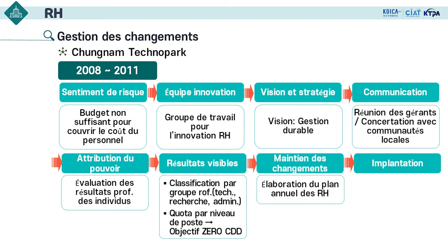Nous avons aussi concerté avec le gouvernement et les communautés locales. La restructuration a été exécutée après discussion avec les chefs d'équipe en tenant compte de l'évaluation de la performance des individus. Nous avons obtenu un résultat visible : la classification des groupes professionnels a été introduite, divisés en groupes tech, recherche et admin. En introduisant le quota par niveau de poste, nous avons fixé un objectif de ne plus recruter d'employés en CDD. Le plan annuel des RH a été établi et contrôlé.